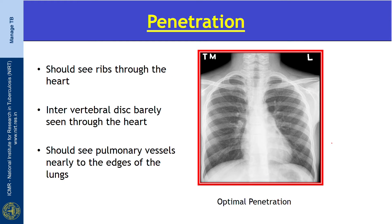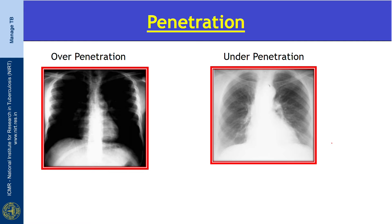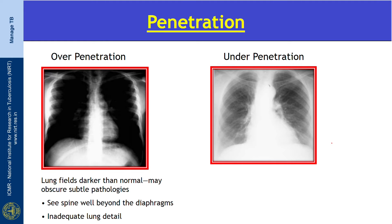Coming to penetration — penetration is the degree to which the X-ray has passed through the body. In an optimally penetrated X-ray, you should be able to see the ribs through the heart. The intervertebral discs should be barely seen through the heart and you should also be able to see pulmonary vessels nearly to the edges of the lung. This X-ray shows an over-penetrated film — the lung fields are darker than normal, which may obscure subtle pathologies. You can see the spine beyond the diaphragm, leading to inadequate lung detail. Over-penetration leads to underreporting.